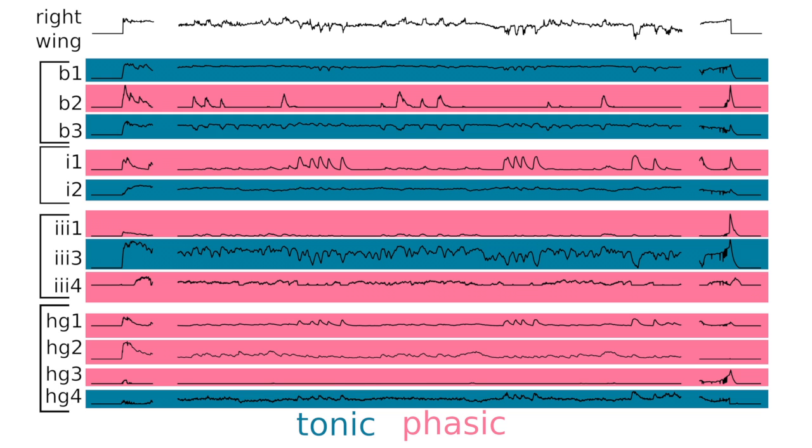Another group, which we call phasic, were typically inactive, except when the flies tried to execute rapid turns, at which time they became transiently active.